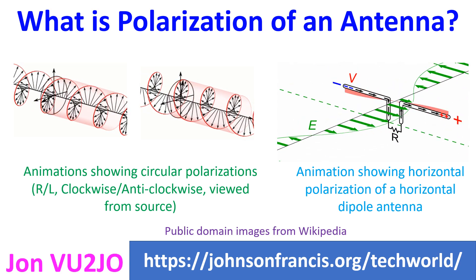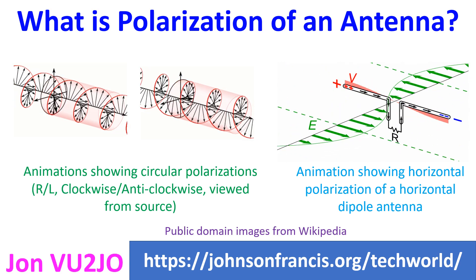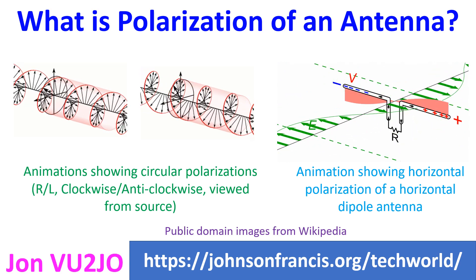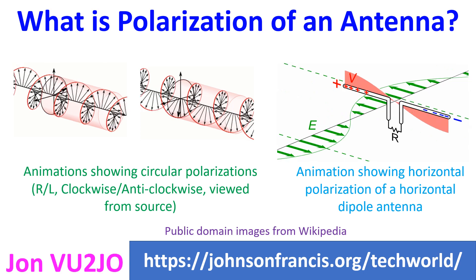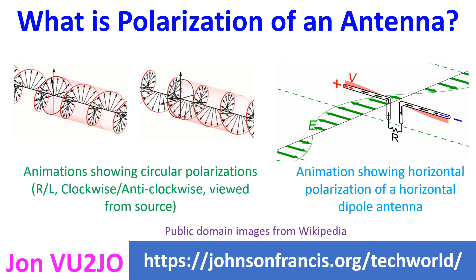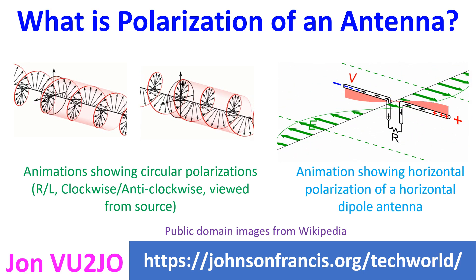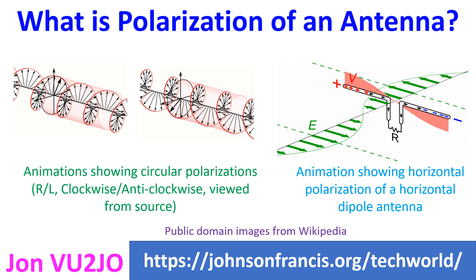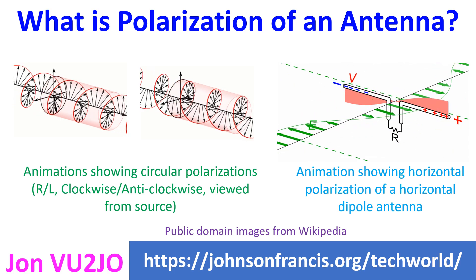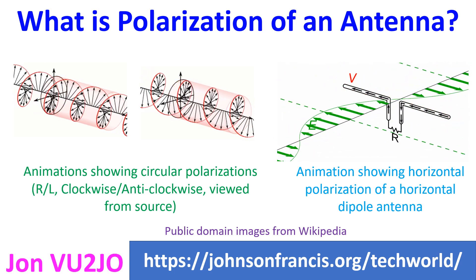Receiving a vertically polarized signal using a horizontally polarized antenna would give poor results. However, reflection from the ionosphere in the case of sky wave propagation can change the polarization.